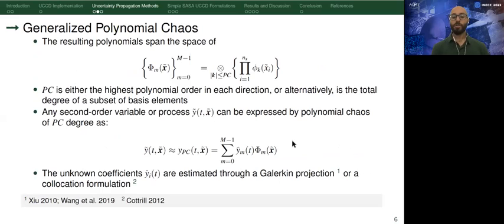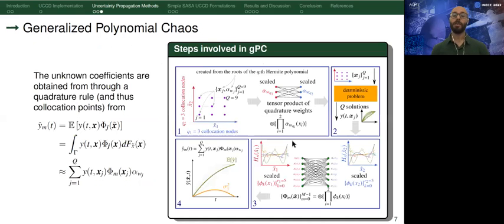But in order to do that, we first need to calculate GPC coefficients, which are generally calculated through a Galerkin projection or a collocation formulation. In this work, we use collocation formulation, and that requires a quadrature rule. Using that, we can find out the statistics of any response that you're interested in. Here in this figure, you can see all of the steps that are involved in implementing a GPC approach.